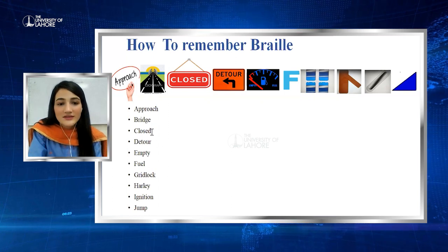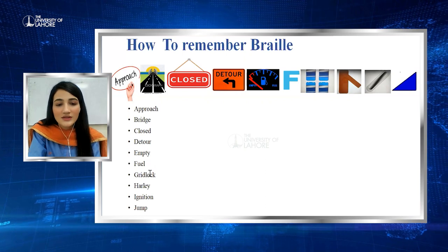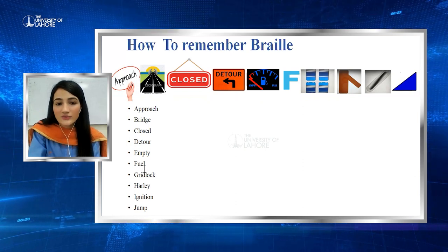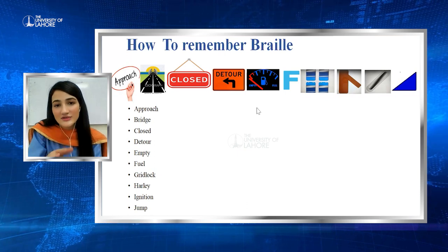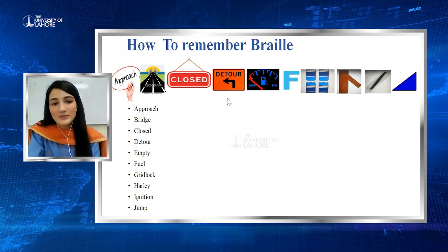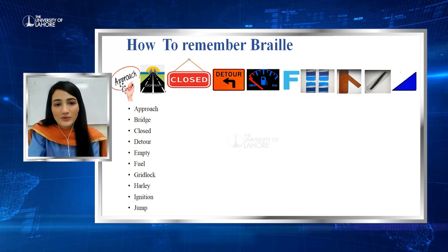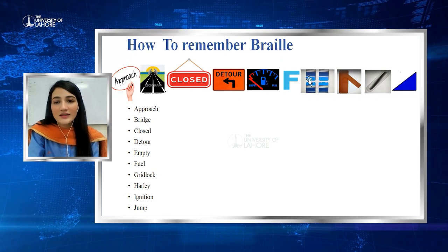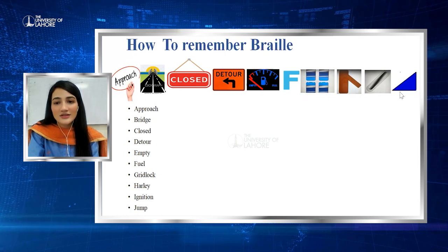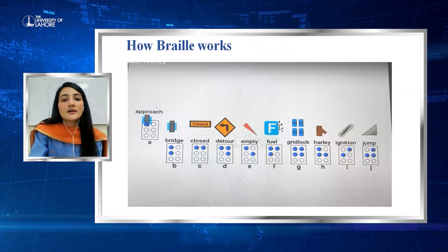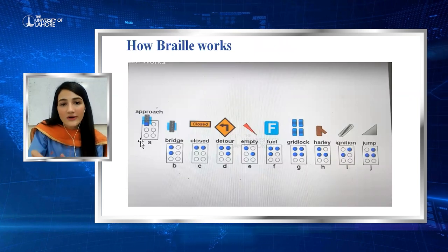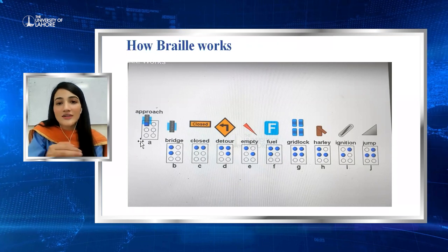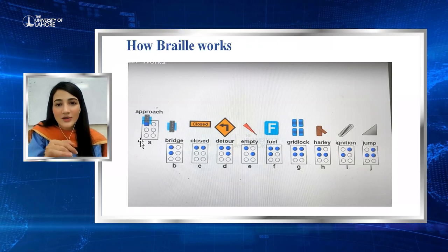These words — approach, bridge, closed, detour, empty, fuel, gridlock, Harley, ignition, and jump — you have to remember the story first, then these words, and then the pictures as well. They will resemble the patterns of the Braille grid. The images correspond to each letter from A to J. Now you have to raise dots according to these words in the Braille pattern A to J, where only four dots are raised.